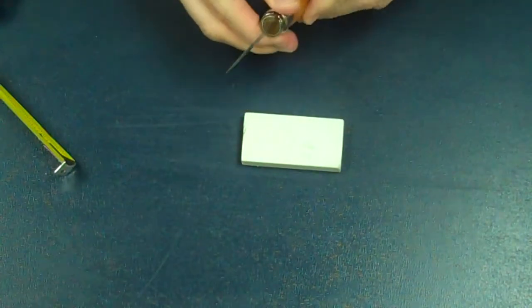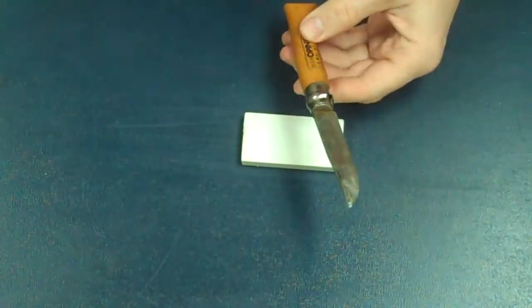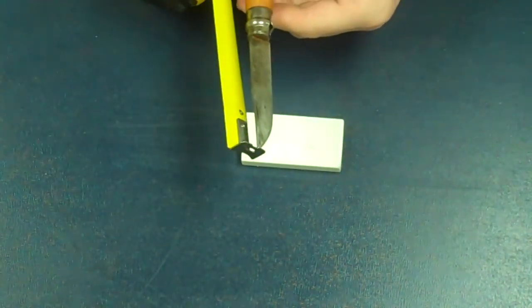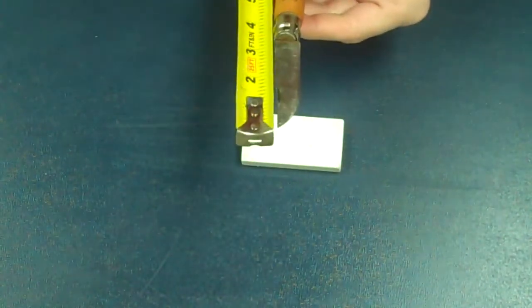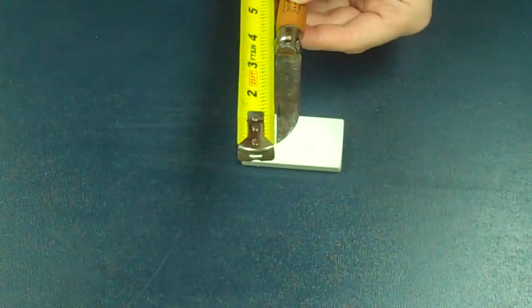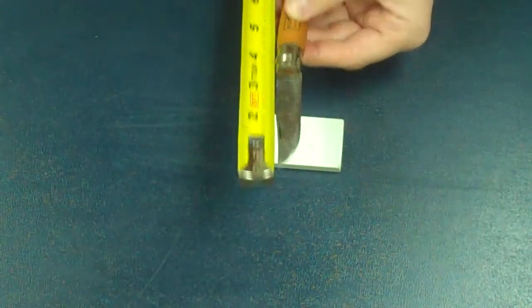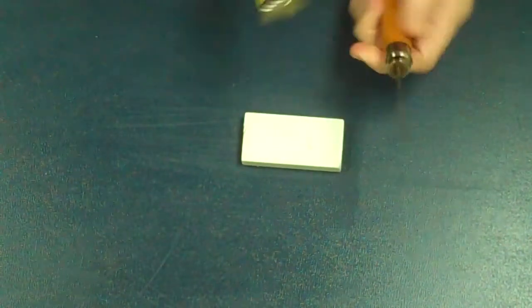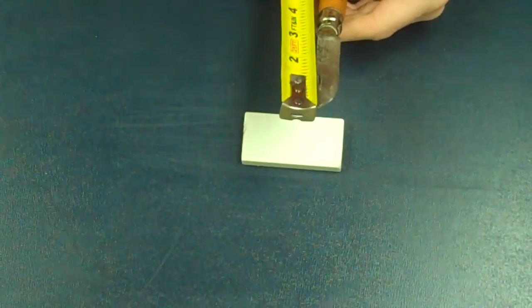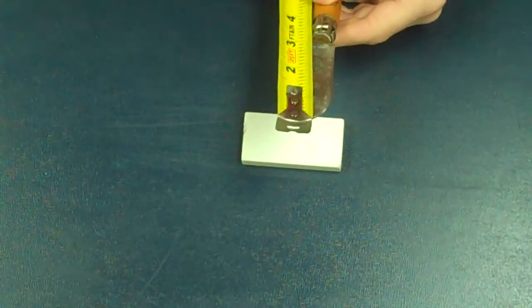And then fully extended and locked, and that lock is an important part. The overall length at this point is a little, maybe a hair over seven inches. And the blade is right at three inches.